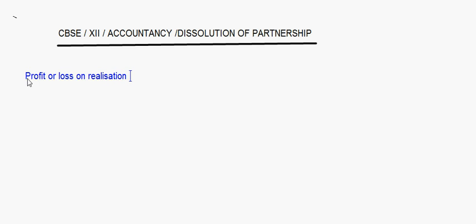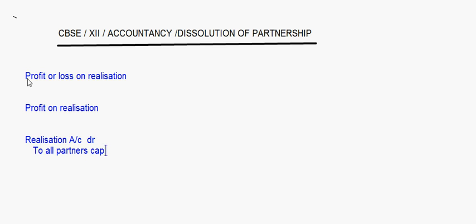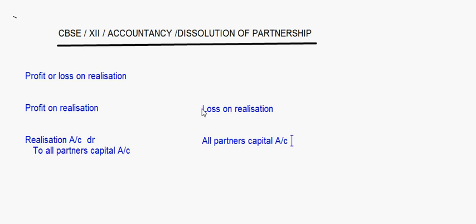Whatever is the profit or loss on realization — if there is a profit on realization, the entry is: Realization Account debit to all Partners' Capital Account. This is to be done in the profit sharing ratio. And if there is a loss on realization, the entry is: All Partners' Capital Account debit to Realization Account.